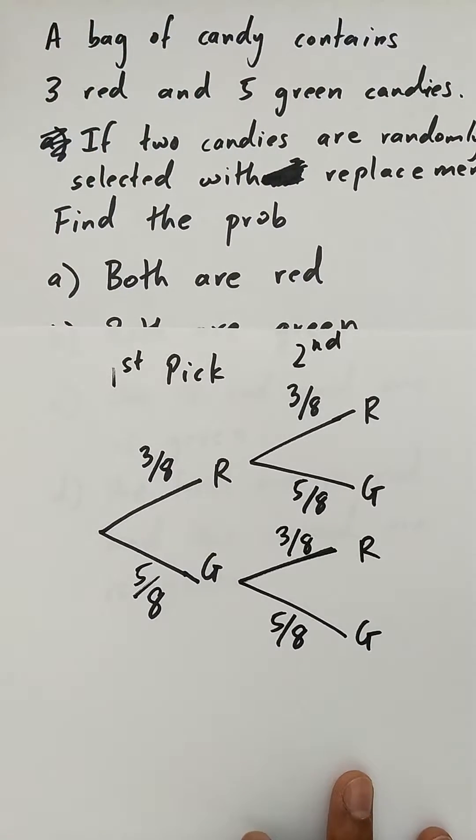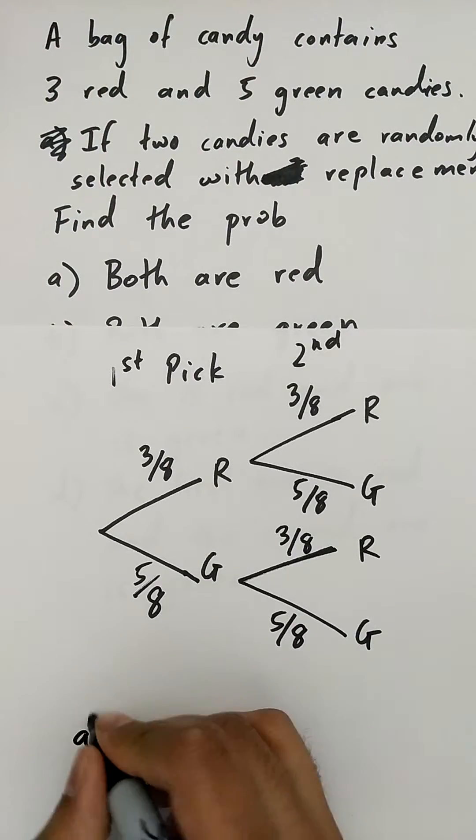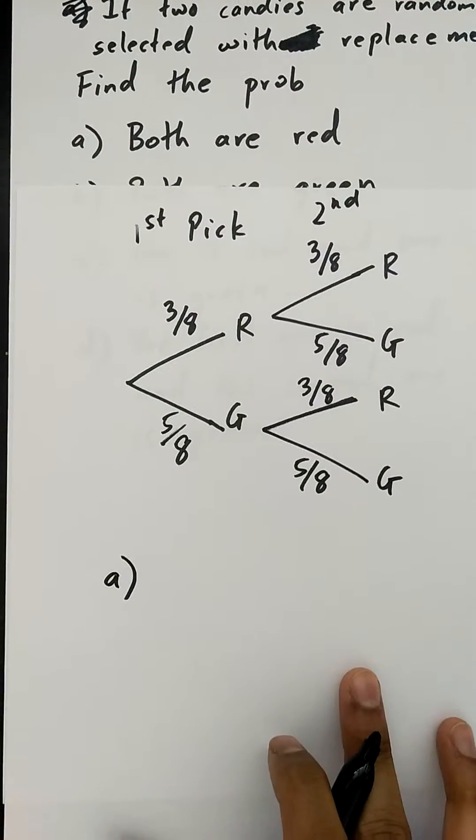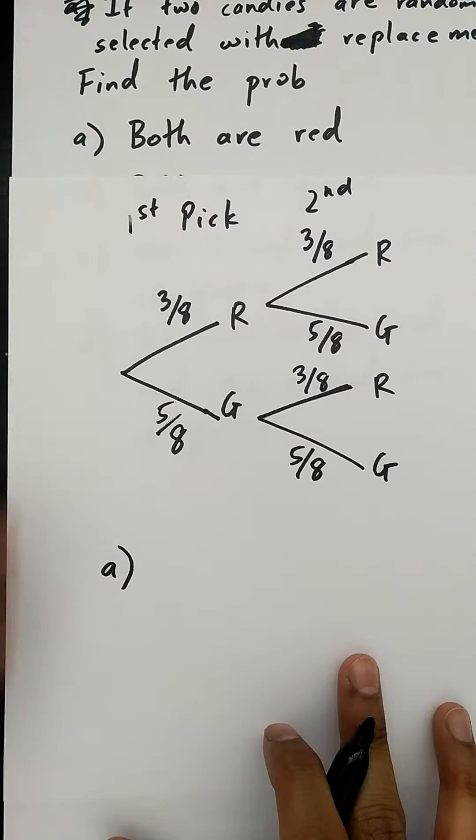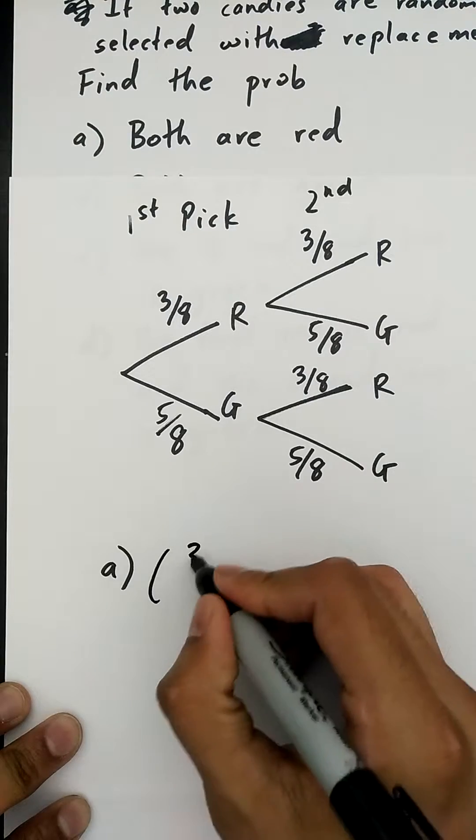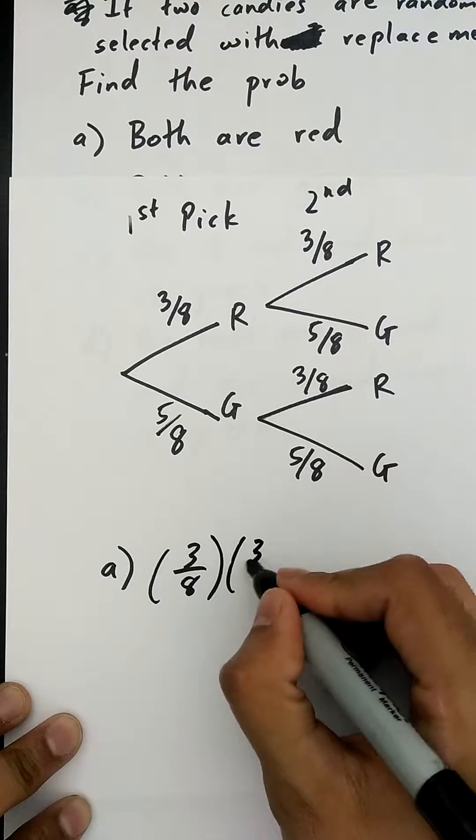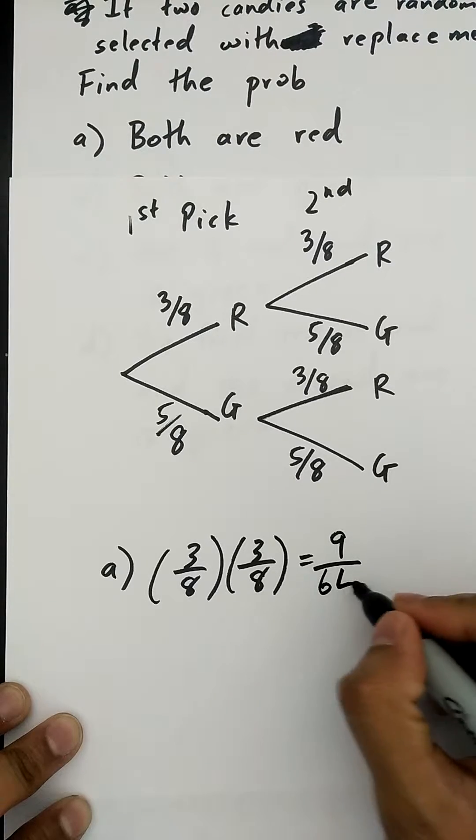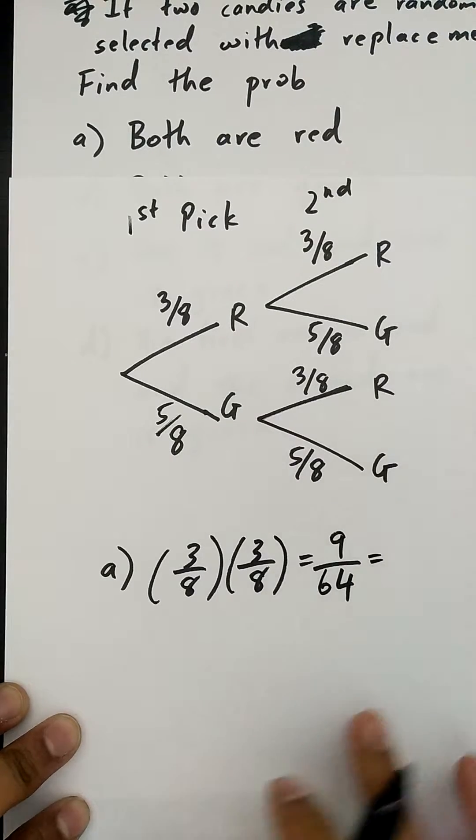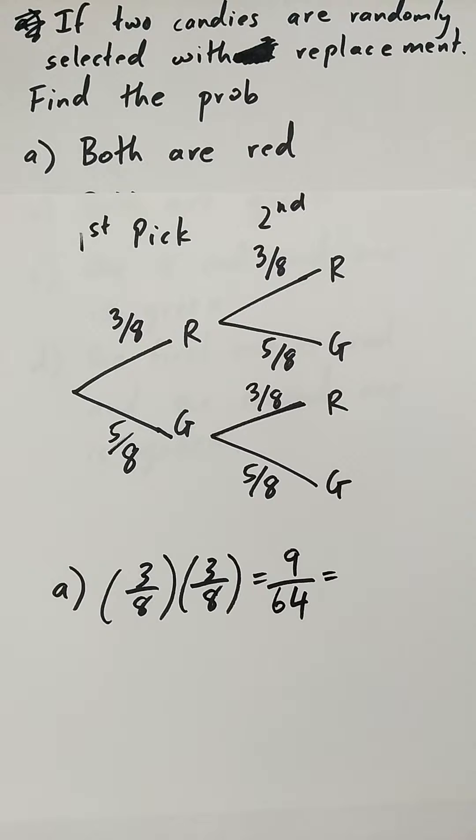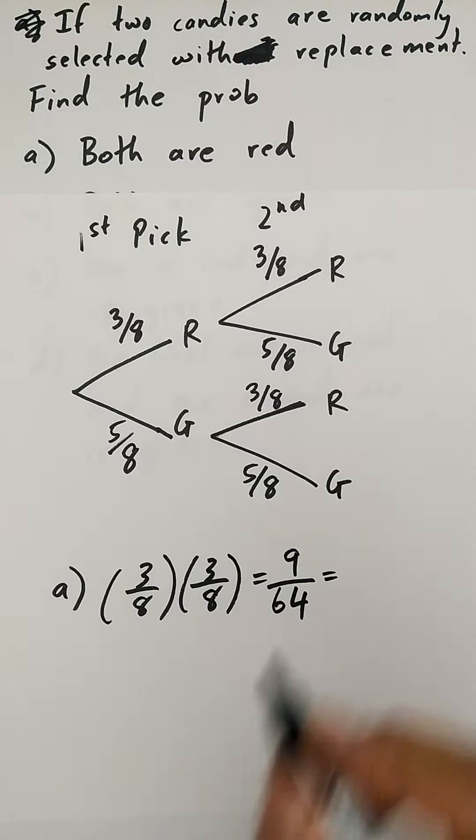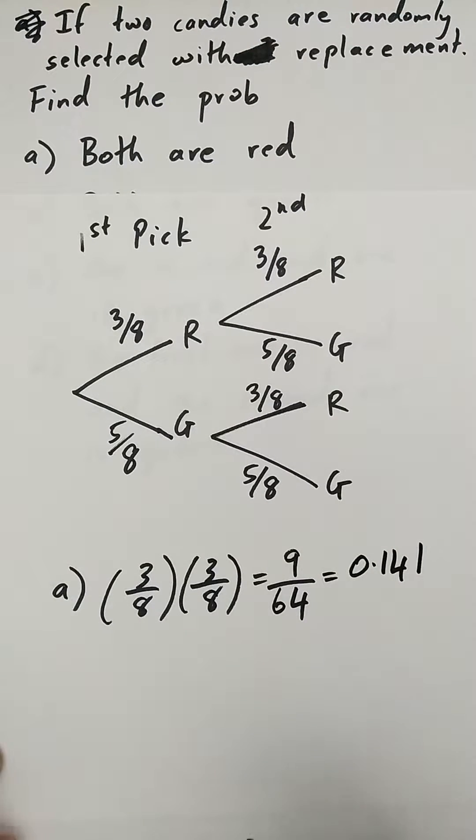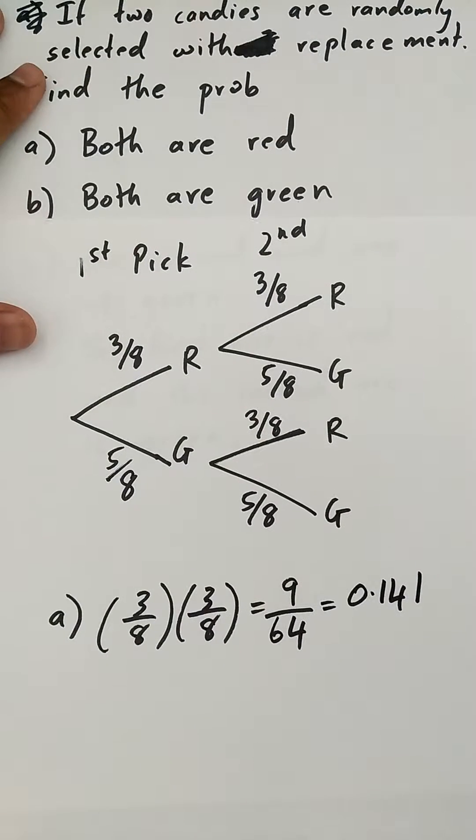Okay, so if I'm answering the questions, again it's going to be pretty similar to the previous question. In part a, what is the probability that both are red? Going to go red, red, which is 3 over 8 times 3 over 8, which is 9 over 64, which is also 0.141.